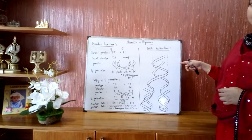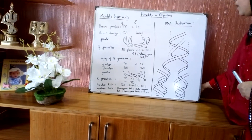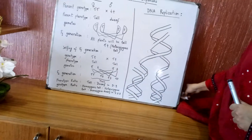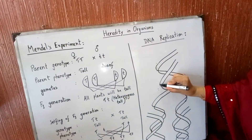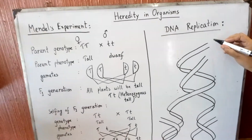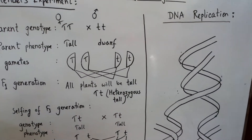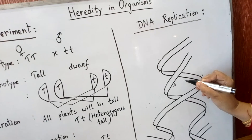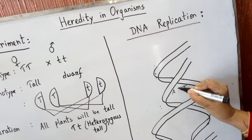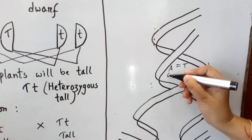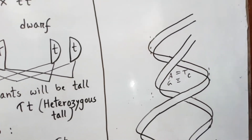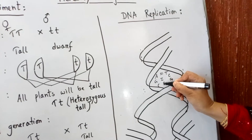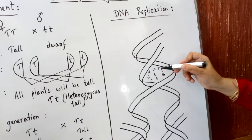Now let us discuss these steps. Look at the diagram carefully. Consider this is the DNA — last class we discussed about the structure of DNA, the double helical model. One strand goes from 5 prime to 3 prime and another strand goes from 3 prime to 5 prime. Here nitrogenous bases — you can write any nitrogenous bases like A, T, G, C — but you must make sure that complementary nitrogenous bases are connected. Always adenine connects with thymine and guanine connects with cytosine.